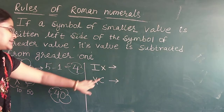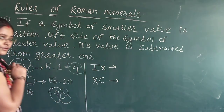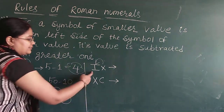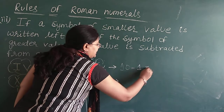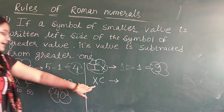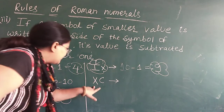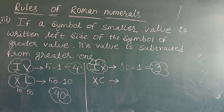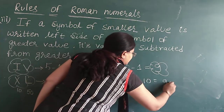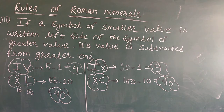Continuing rule three: IX — I stands for 1, X stands for 10. The smaller value 1 is written to the left of 10, so 10 minus 1 equals 9. IX means 9. Also XC — X stands for 10, C stands for 100. 10 is smaller and written to the left of 100, so 100 minus 10 equals 90. If the symbol of smaller value is written to the left of greater value, the smaller value gets subtracted from the greater value.